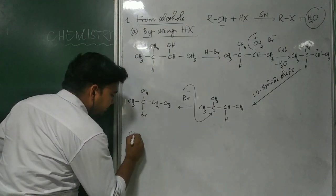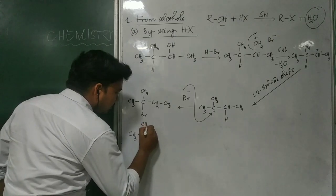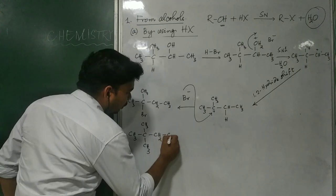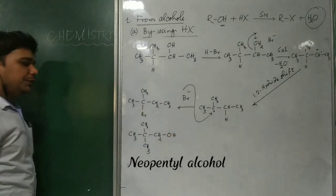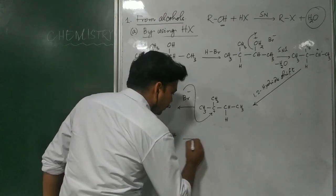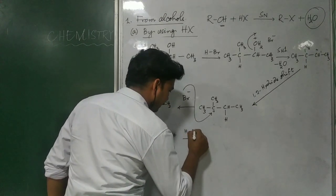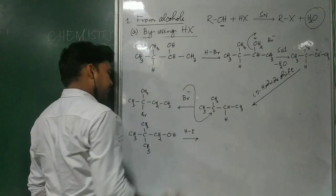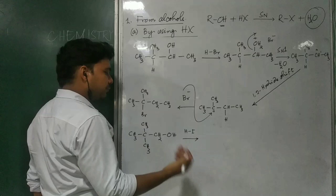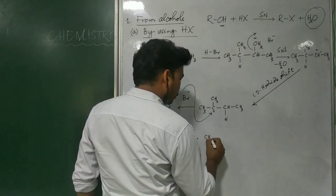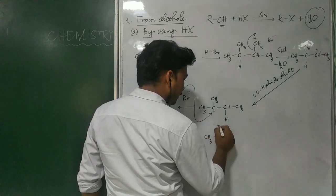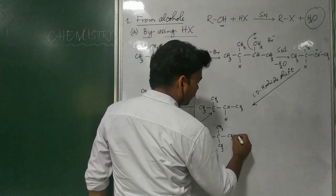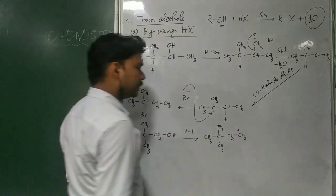Similarly, another example can be considered. This is another alcohol molecule — neopentyl alcohol. When this is treated with a halogen acid, let us consider HI. Similar to the previous case, first of all protonation will occur. After protonation, you will get the protonated alcohol — this is your protonated alcohol.